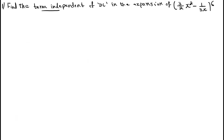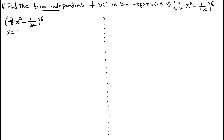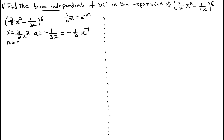First question: find the term independent of x in the expansion of (3/2 x² - 1/3x)⁶. Write x value, a value, and n value: x = 3/2 x², a = -1/3x = -1/3 · x⁻¹ (since 1/xᵐ = x⁻ᵐ), and index n = 6.